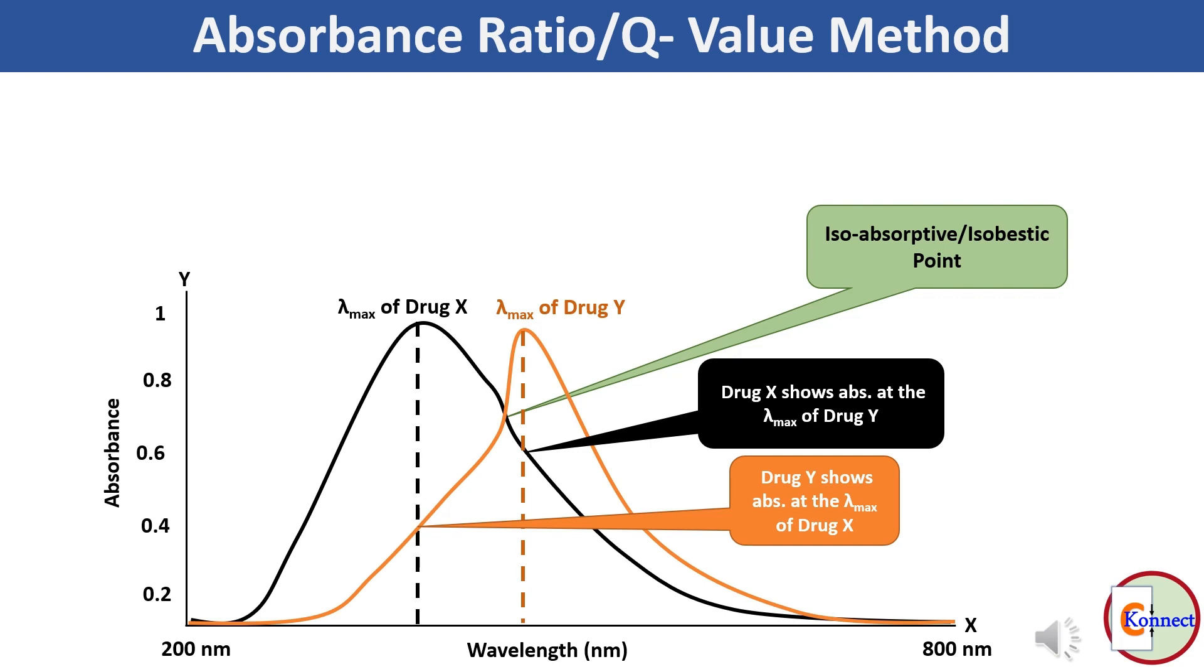If you see this type of spectral pattern in the spectra of both of the drugs, you can apply absorbance ratio method to find out the quantity of individual drugs in the multi-component dosage form.